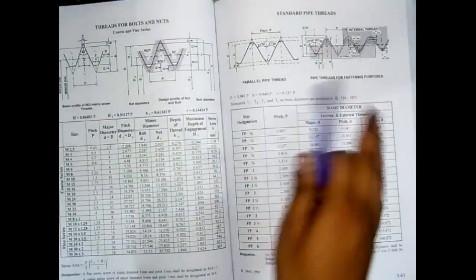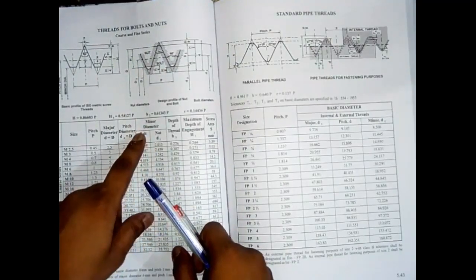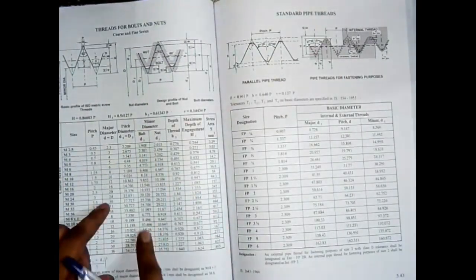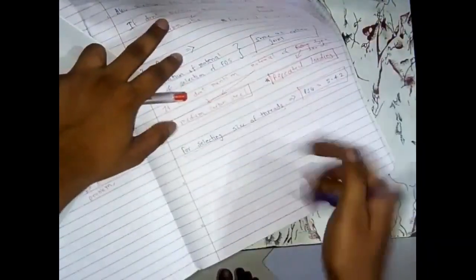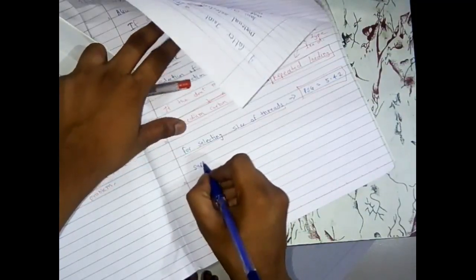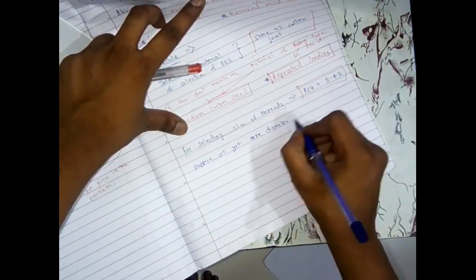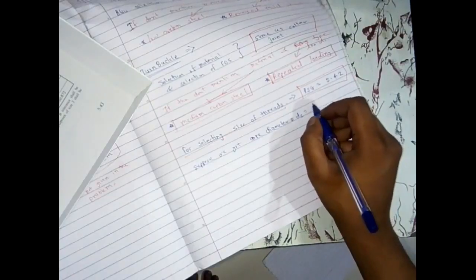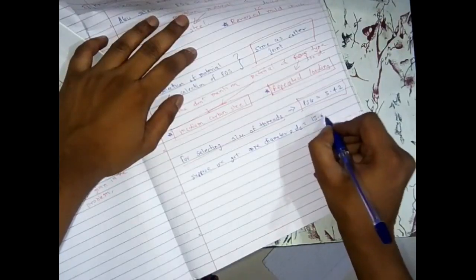In the turnbuckle, we need to find the core diameter of the rod. The core diameter is the minor diameter. Here, the rod is treated as a bolt so we look at the minor diameter column. Suppose we calculated the core diameter as dc = 15.43 mm.